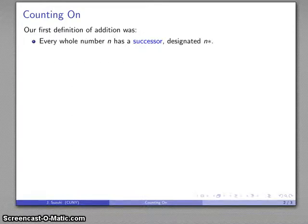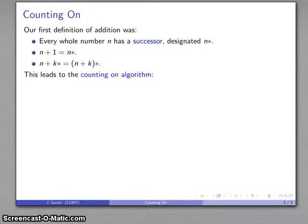Every whole number has a successor which we designate n star, it's the number after n, and we have a couple of rules: n plus 1 is the number after n, and n plus the successor of k is the successor of n plus k. These come from the Peano postulates and put together they lead us to what's known as the counting on algorithm for addition.